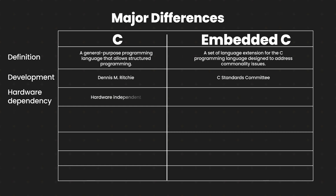C is hardware independent. Therefore, it is not necessary for the programmer to know hardware to write C programs. However, embedded C is strictly hardware dependent. Thus, the programmer should have a good understanding of hardware to write embedded C programs.